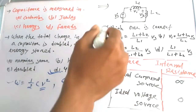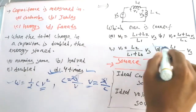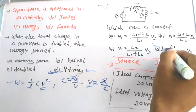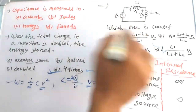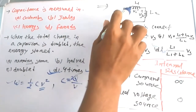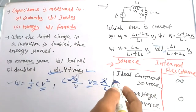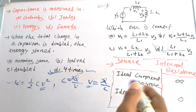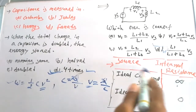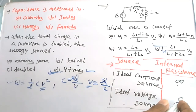In the next question about the correct voltage divider form for inductors, option D is correct: V1 = [L1 / (L1 + L2)] × Vs. Additionally, for an ideal current source the internal resistance is infinity, and for an ideal voltage source the internal resistance is zero.